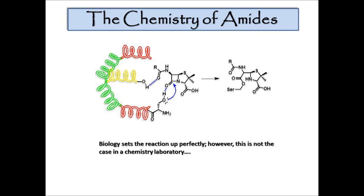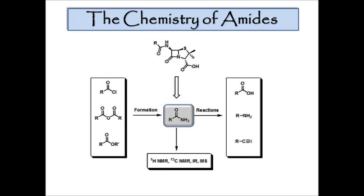Unfortunately, that's not the case in a chemistry laboratory. As a synthetic chemist, we wish it would be that way, but it isn't. So how do we go about doing chemistry, which nature does so eloquently, in a lab setting? We have to do it in a stepwise fashion. If we look at the penicillin molecule and hone in on the functional group most important in this mechanism of action, it's the amide group — a C=O bonded to a nitrogen compound.